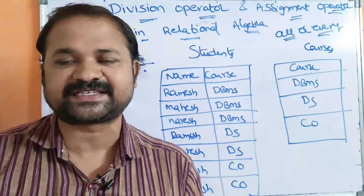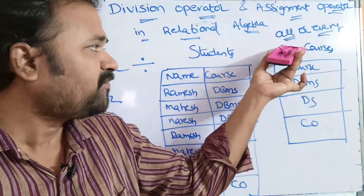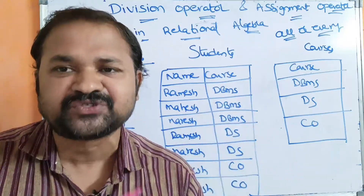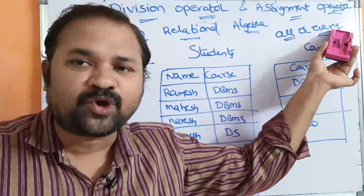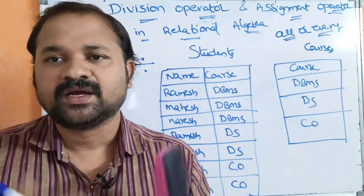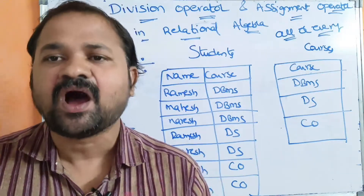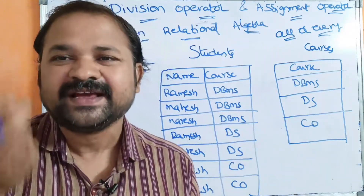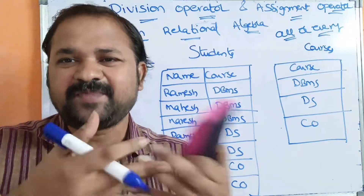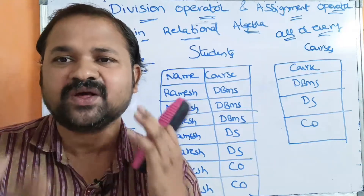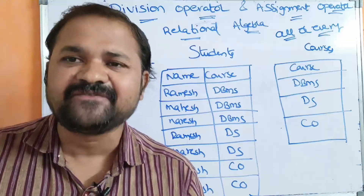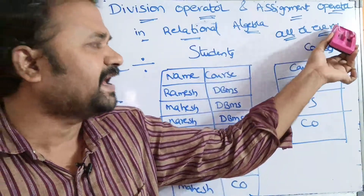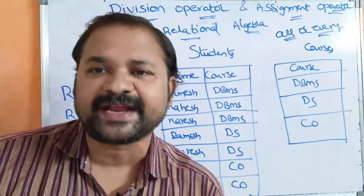For example, we have queries like: find the list of students who have registered for all the courses in a particular semester, or find the list of students who have registered for every course in a semester, or find the list of students who have passed in all the exams in a semester, or find the list of students who have failed in all the examinations. So when the query contains either 'all' or 'every', then only we use the division operator.